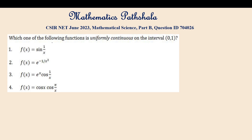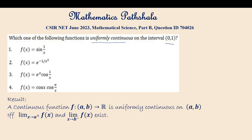Which one of the following functions is uniformly continuous on the open interval (0, 1)? Before starting the problem, we will see a result: a continuous function f on open interval (a, b) to the real numbers is uniformly continuous on (a, b) if the limit as x tends to a⁺ of f(x) and the limit as x tends to b⁻ of f(x) both exist.